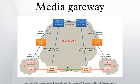Because the media gateway connects different types of networks, one of its main functions is to convert between different transmission and coding techniques. Media streaming functions such as echo cancellation, DTMF, and tone sender are also located in the media gateway.